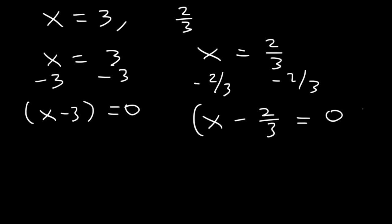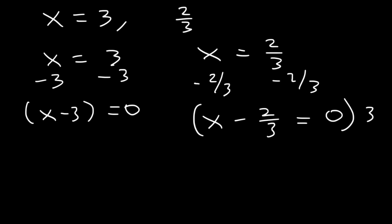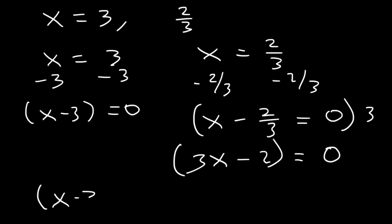Now we want to get rid of the fraction, so multiply everything by 3. 3 times x is 3x, and 3 times negative 2/3 is negative 2. The 3's cancel, and 0 times 3 is 0. So the other factor is 3x minus 2. In factored form, it's (x minus 3)(3x minus 2).